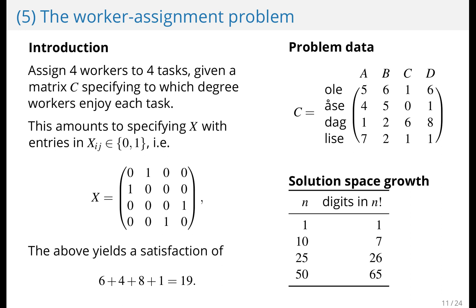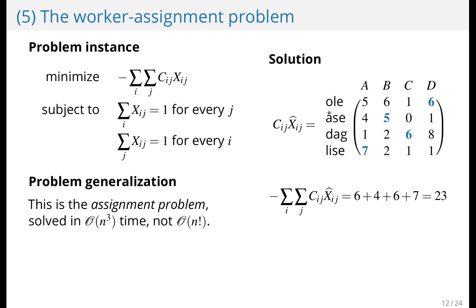But there exists an efficient algorithm for this problem, which is called the assignment problem. The algorithm is called the Hungarian algorithm. And it solves this in cubic time, instead of n factorial time. And the optimal solution is shown here, giving you a satisfaction level of 23.